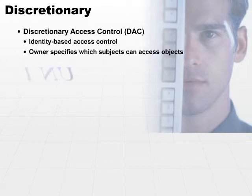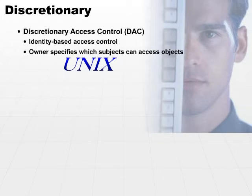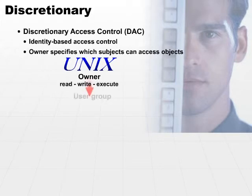For one example, if we look at the Unix file system — the Unix file system has three different sets of permissions. In this discretionary access control mechanism, the owner has certain properties: read, write, execute. The user group to which the owner belongs also has read, write, execute permissions.